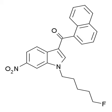AM1235 is a cannabinoid receptor agonist with a Ki of 1.5 nM at CB1 compared to 20.4 nM at CB2. While the 6-nitro substitution on the indole ring reduces affinity for both CB1 and CB2 relative to the unsubstituted parent compound AM2201, CB2 affinity is reduced much more, resulting in a CB1 selectivity of around 13-fold.